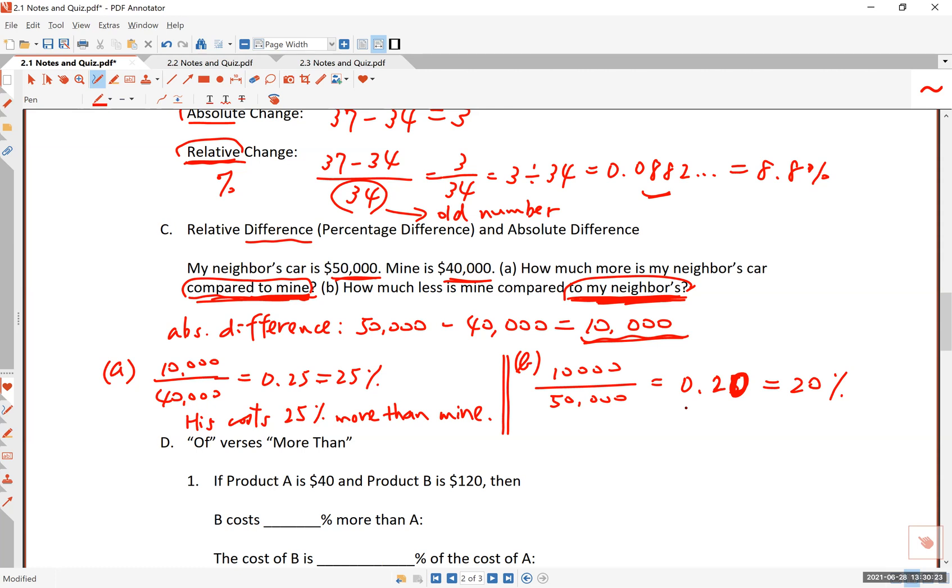And for calculations, you always use the decimal representation of the percentage. And once you get the answer in decimal, you convert that to a percentage. So this one is saying that my car costs 20% less than his.